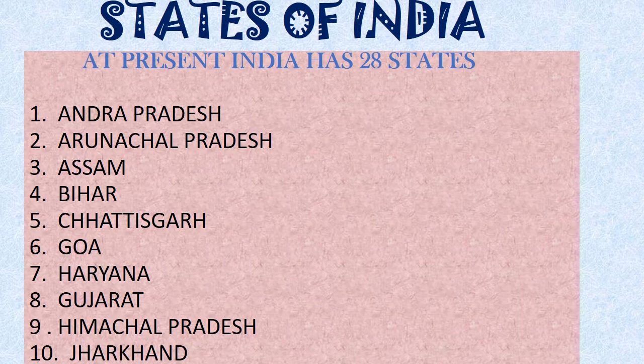Once again, the first 10 states. First: Andhra Pradesh - its capital is Hyderabad. Then Arunachal Pradesh, Assam, Bihar, Chhattisgarh, Goa, Haryana, Gujarat, Himachal Pradesh, Jharkhand. In the next class you can study the capitals and languages of these states. First, learn only the states.